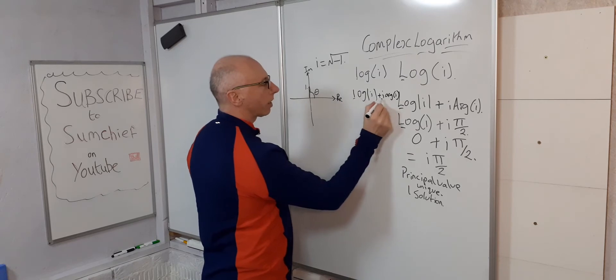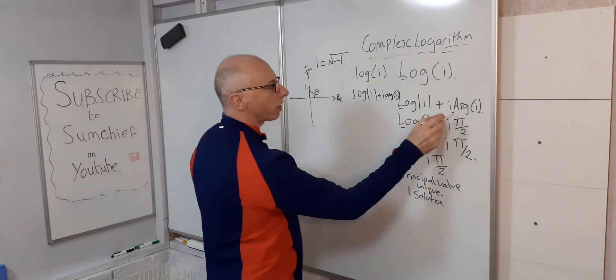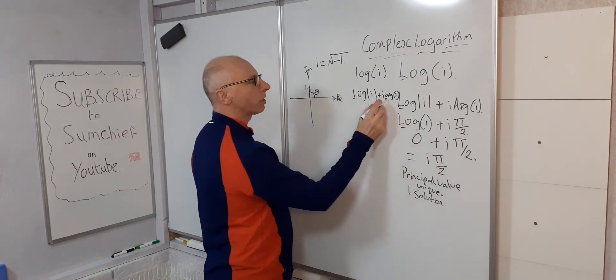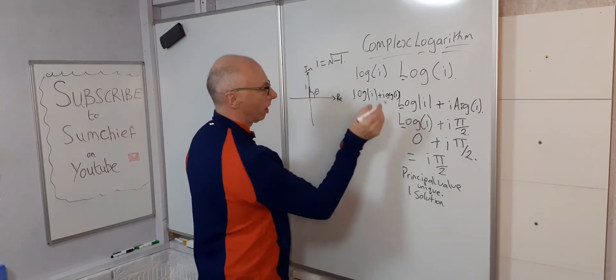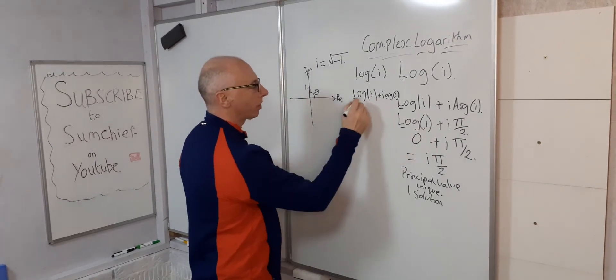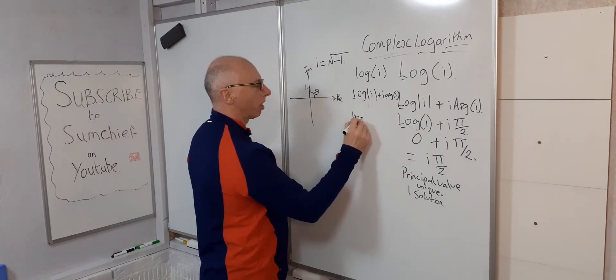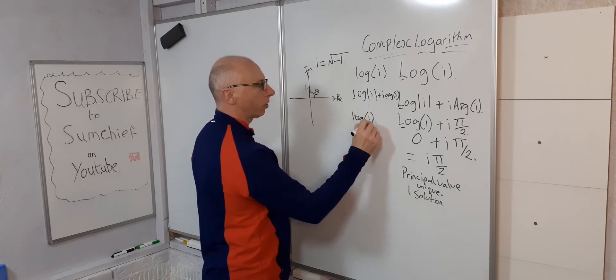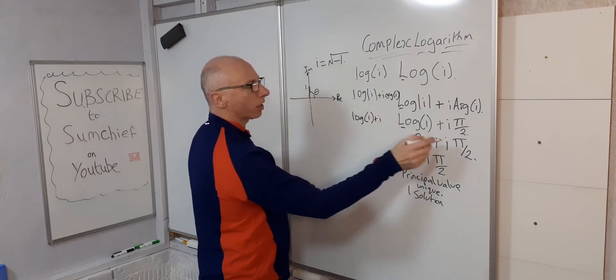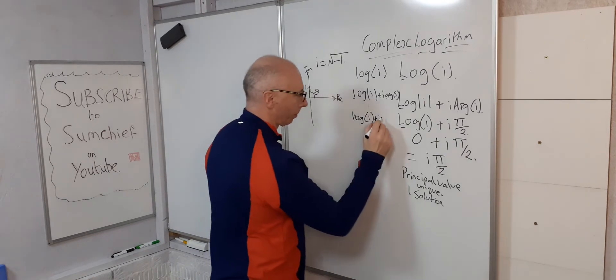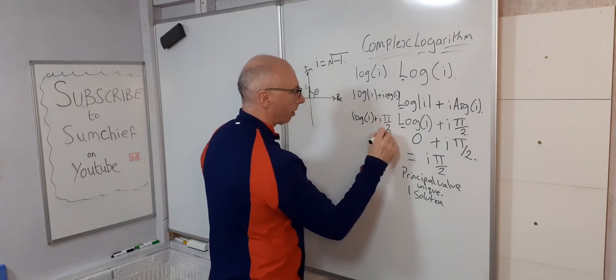Notice we've got a lowercase and a lowercase. So this is for principal argument. This is just for general argument. Move on to the next line, matching this one. So log of i, we'll just give it log of 1, as before. Plus i, argument of i, pi over 2. So that's i pi over 2.